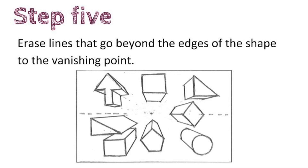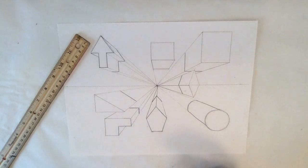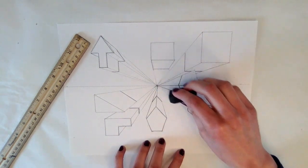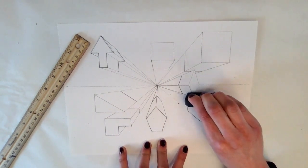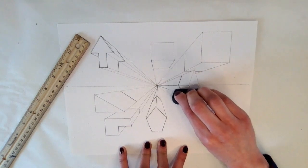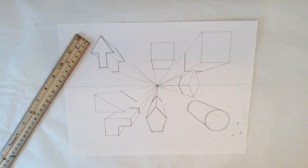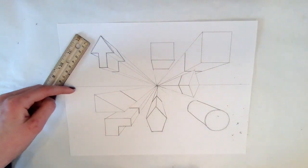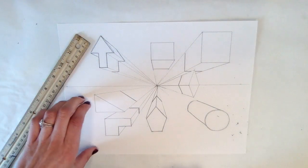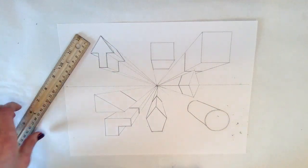And step number five is that you erase lines that go beyond the edges of the shape to the vanishing point. I will use a big eraser for this, and I'm just going to erase all the lines that go to the vanishing point that extend beyond my shape that I shortened. If you want to keep your horizon line, you can, so you can have a sky and earth, or you can erase the whole thing.